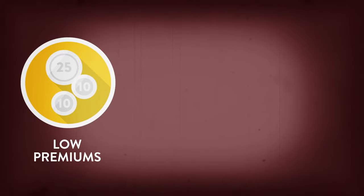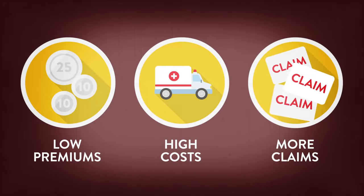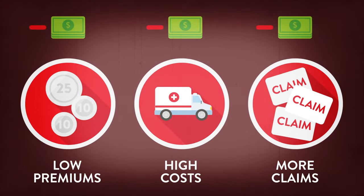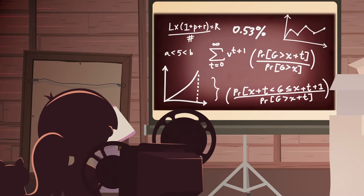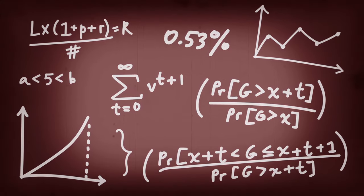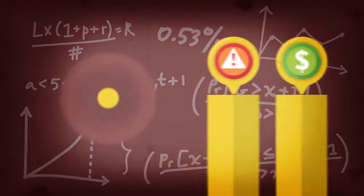If premiums are set too low, if emergency costs are higher than anticipated, or if more individuals make claims than expected, the insurance provider will lose money. Insurance providers, therefore, apply statistics and mathematics to understand the amount of risk their policyholders represent and adjust their premiums accordingly.